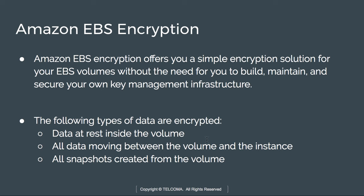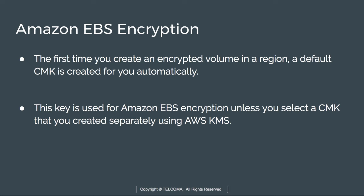The types of data required to be encrypted include: data at rest inside the volume, all data in motion, and all snapshots. When creating an EBS volume for the first time, a default CMK is used, but you can create your own CMK for more flexibility — giving you the ability to create, rotate, disable keys, define access controls, and audit the encryption keys. This feature is supported across all EBS volume types.